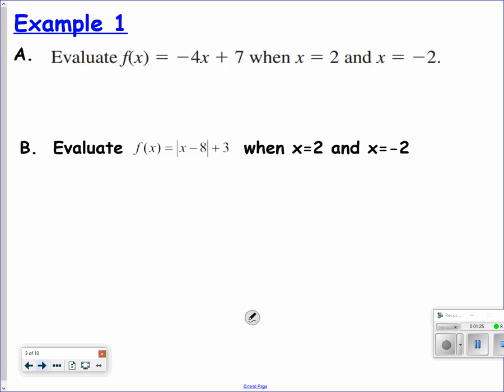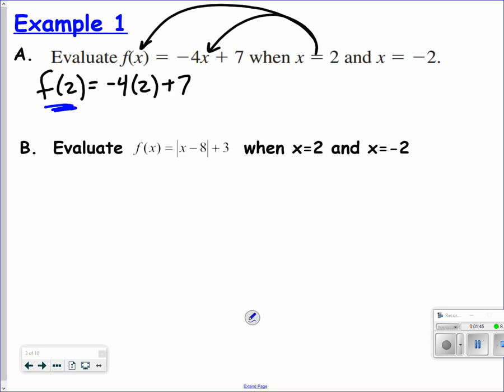So evaluate f of x equals negative 4x plus 7 when x is 2. This is how you should write this: f of 2 equals negative 4 times 2 plus 7. Notice that I put 2 in for both x's. Do not touch this side. Keep it as f of 2. And then calculate the other side of the function.